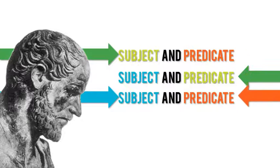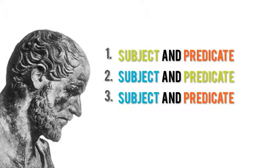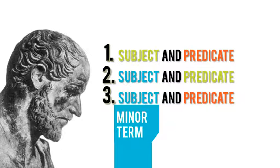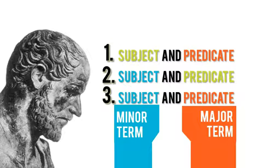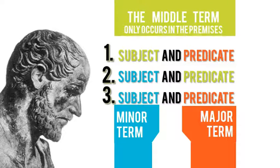So, let's go ahead and label all this stuff. So, the subject of the last sentence is what we call the minor term, and the predicate of the last sentence is what we call the major term. The term that does not show up in the last sentence, the term that doesn't show up in the conclusion, the green doll, is what we call the middle term, and it's what the conclusion is mediated through.